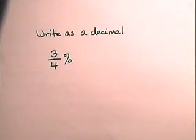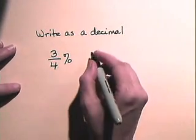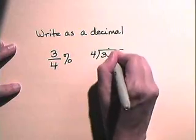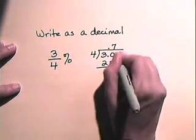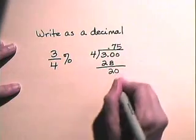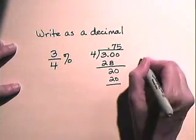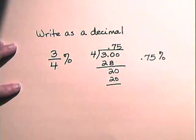We will now write a fractional percent as a decimal. Let's write three-fourths percent as a decimal. In order to write three-fourths percent as a decimal, we're going to have to write it as a decimal percent. So for three-fourths, we will divide four into three, add a decimal and a zero, and obtain 0.75 percent, or seventy-five one-hundredths percent.